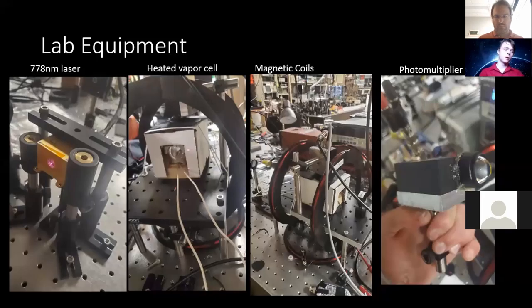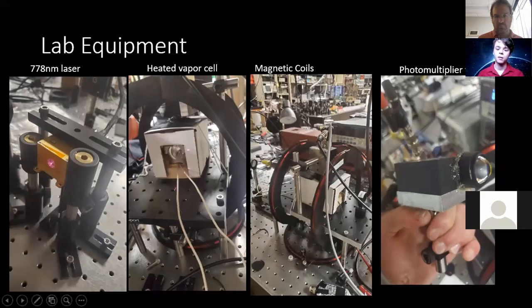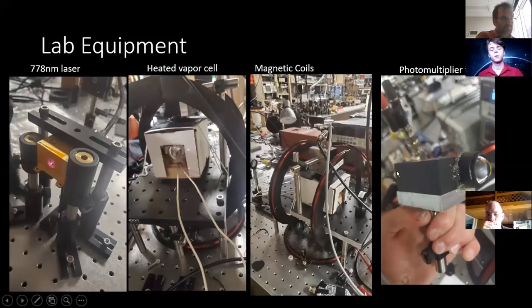These are just some photos of the lab equipment we're working with. We have our interrogating laser on the left, our vapor cell next to that. And then we have our coils, our Helmholtz coils along the optical axis and then a few other coils on the other side. And we have our photomultiplier tube. There's a few other components, but these are just the main ones.